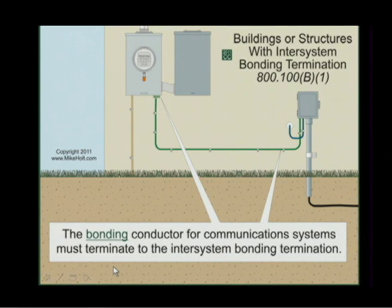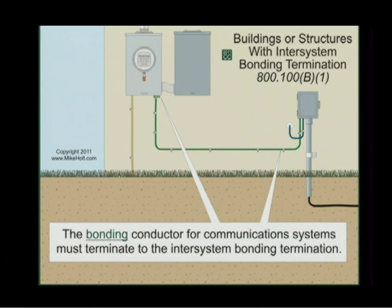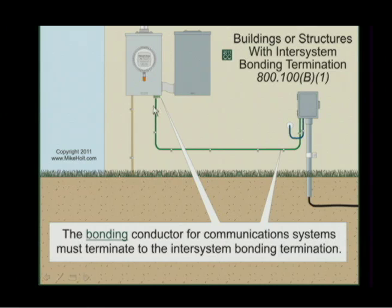Now let's go over the rule. Section 800.100.B1 says the bonding conductor for communication systems must terminate to the inter-system bonding terminal. That's how you take care of your telephone. It is as easy as can be.